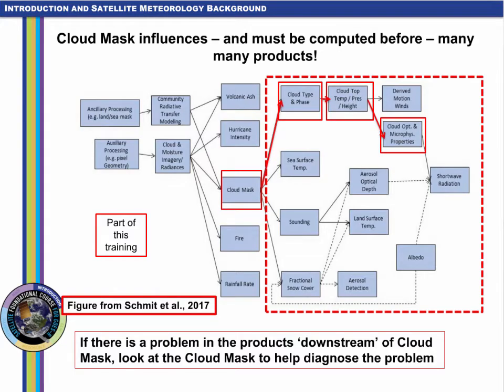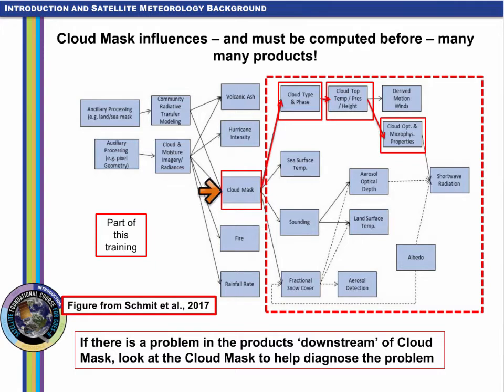This flow chart shows the order in which the products are computed. Cloud mask is computed first, then cloud type and phase, then cloud top parameters, and then cloud optical properties. If you see something suspicious in a cloud product, or in a product that might rely on cloud clearing, step one should be to examine the cloud mask. It's not perfect and it can cause errors in downstream predictions. If cloud masking is wrong, it can introduce errors into every variable within the dashed red box.